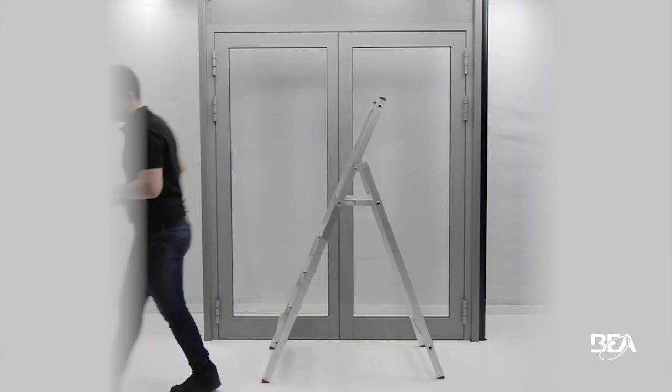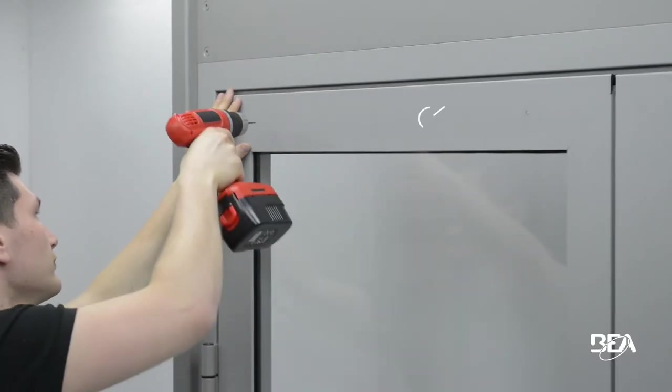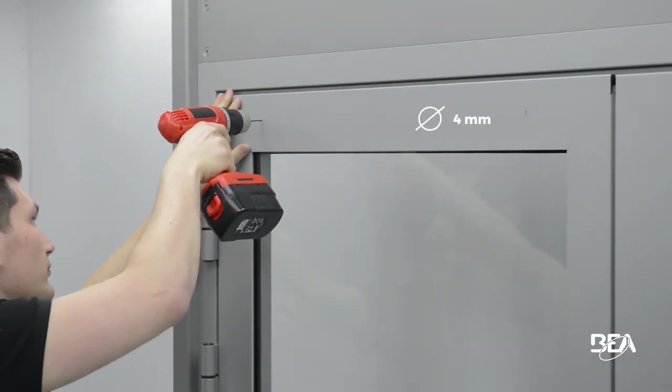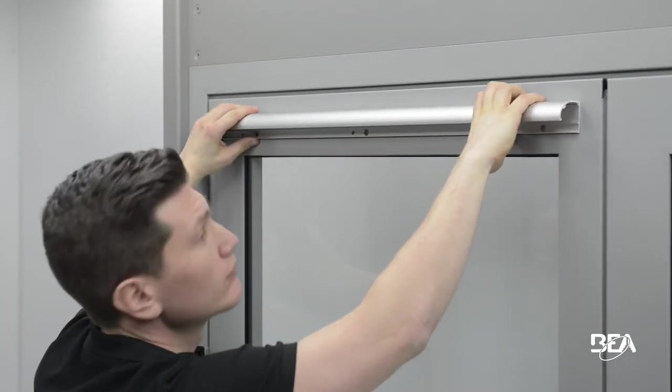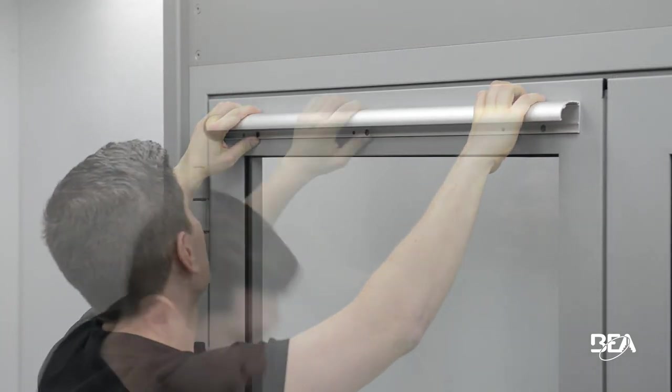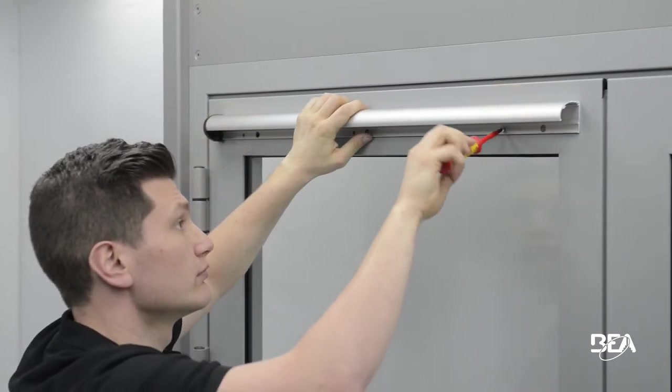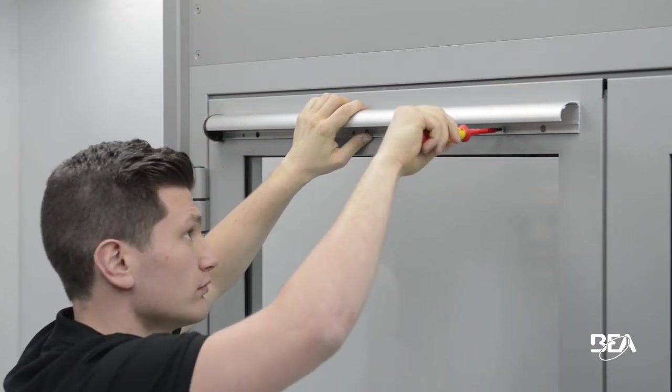Remove the profile and pre-drill the holes for the fixation screws with a 4mm bit. Fix the profile to the door leaf using the provided screws.